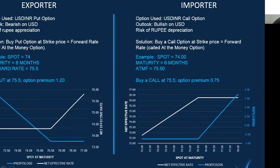Let's understand more on options by looking at this example. Suppose the exporter and importer have exposure in dollars. The option used by the exporter is a USD/INR put option. The exporter's outlook is bearish on the USD/INR pair, so the risk of the exporter is rupee appreciation. The solution is that the exporter buys the put option at a strike price equal to the forward rate, known as an at-the-money option. For example, if the spot is currently 74 and the exporter requires an option of 6 months and the forward rate is 75.5, then the exporter buys the put option at a strike price of 75.5 and pays an option premium of 1.2.